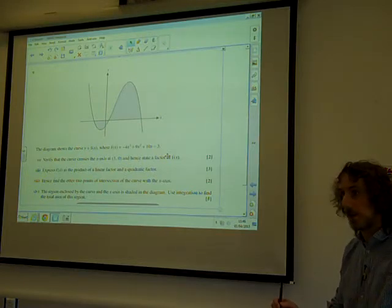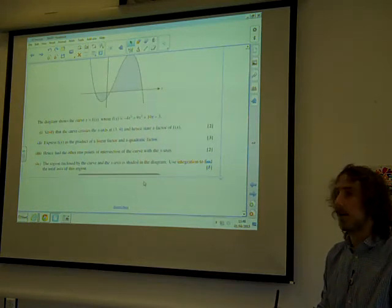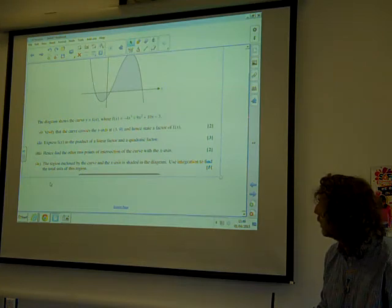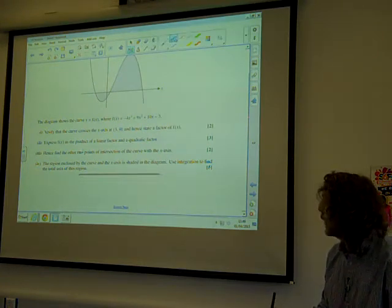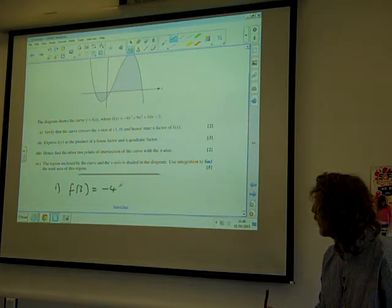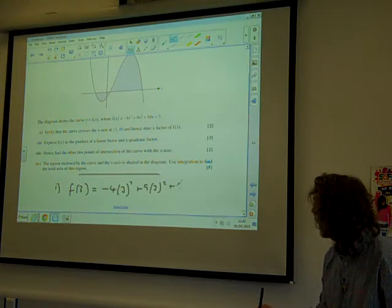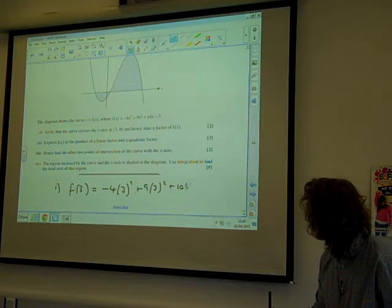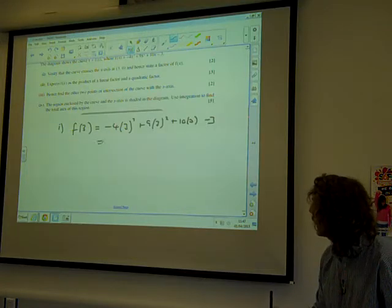Well, verify just means sub the numbers in and check it works. So what we're doing here is verifying that (3, 0) satisfies this equation. For part 1, f(3), and we want that to be equal to 0. That gives us -4 times 3³ + 9 times 3² + 10 times 3 - 3.